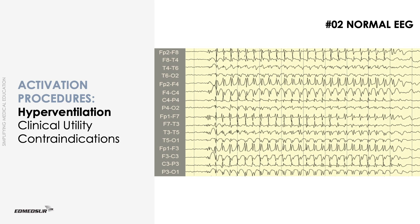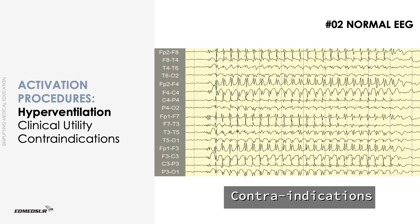As per the British Society of Clinical Neurophysiology guidelines, the absolute contraindications to hyperventilation include: history of intracranial hemorrhage or myocardial infarction in the last 1 year, significant cardiac disease like unstable angina, pulmonary disease with breathlessness at rest, and sickle cell disease or trait.